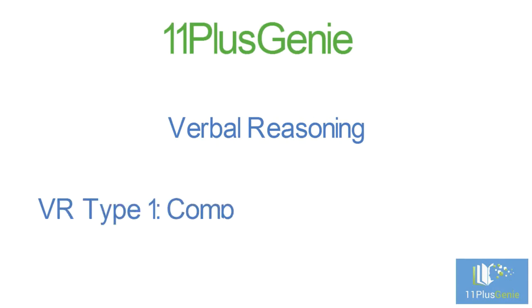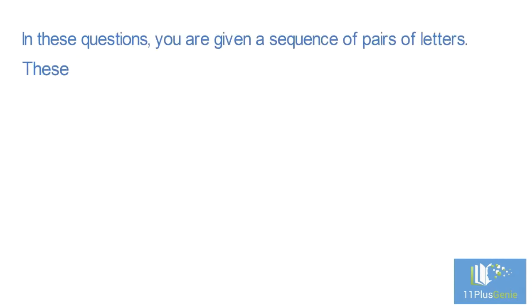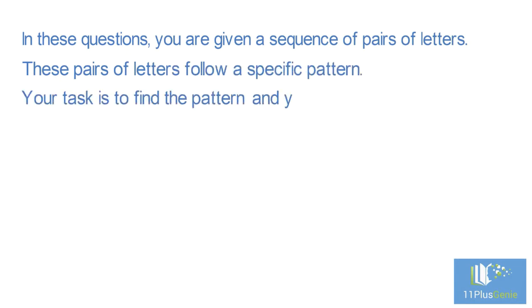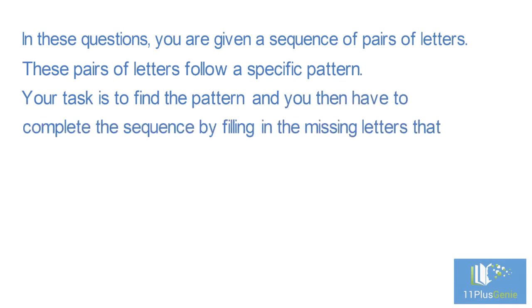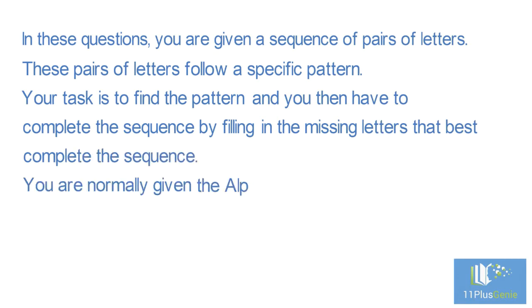Verbal Reasoning Type 1: Complete the Letter Sequence. In these questions, you are given a sequence of pairs of letters. These pairs of letters follow a specific pattern. Your task is to find the pattern, and you then have to complete the sequence by filling in the missing letters that best complete the sequence. You are normally given the alphabet line to assist with these type of questions.